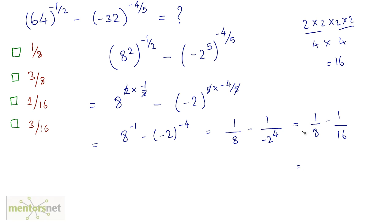So we have 1 by 8 minus 1 by 16. Taking the LCM of the denominator, which is 16: 8 times 2 is 16, so 2 minus 1 gives 1 by 16. So 1 by 16 is the right answer.